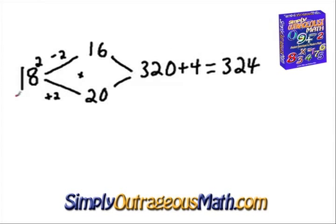Once again, 18 squared. Next closest tens unit which is 20. So we will do a plus 2 here. We do a plus 2 there, we have to subtract 2 on the other side. So 16. 16 times 20 equals 320. Then we square the number that we added and subtracted by. So 2 squared is 4. 320 plus 4 is 324 is our answer.